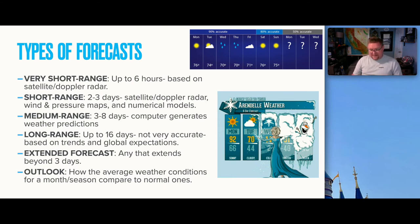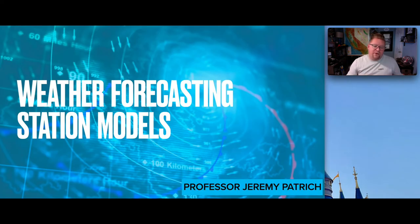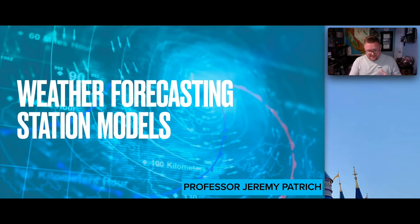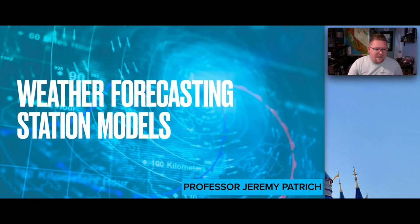We collect weather data in so many different places, but how do we interpret it? We utilize what's considered a station model. We have weather stations throughout the world everywhere, and those stations create a model or diagram with symbology that gives us information to interpret. By looking at a very simple diagram, we're able to understand a tremendous amount of data.